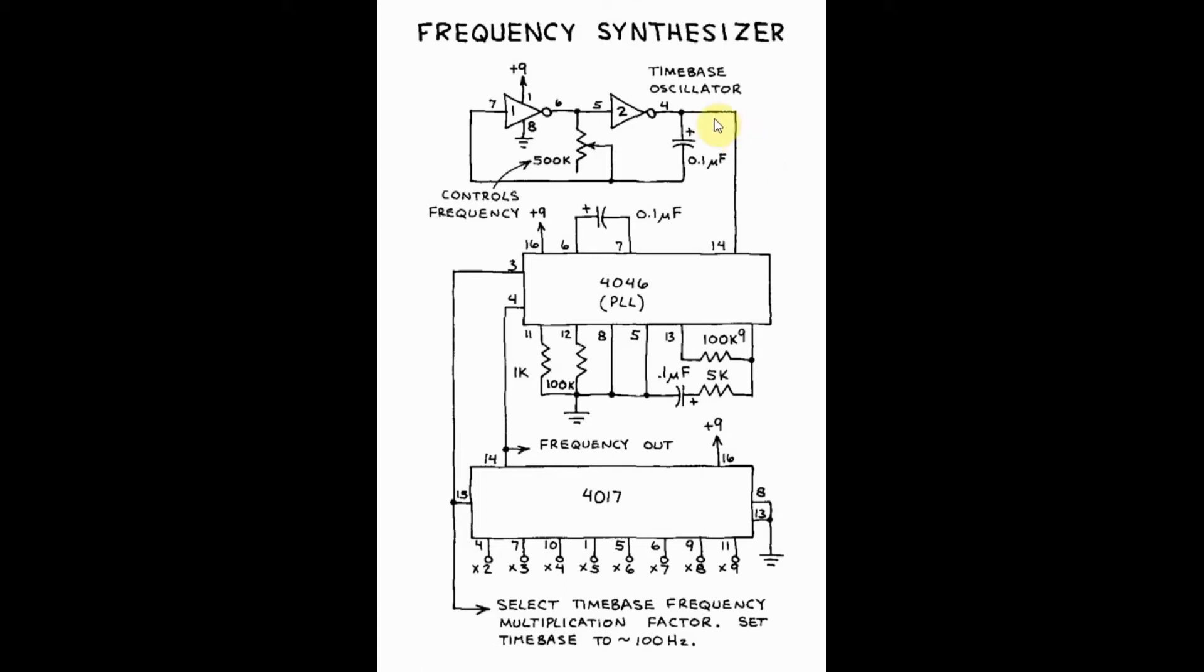The time-based oscillator generates a clock signal with a frequency that is controlled by this pot here. The frequency of the time-based oscillator is adjusted to approximately 100 Hz.